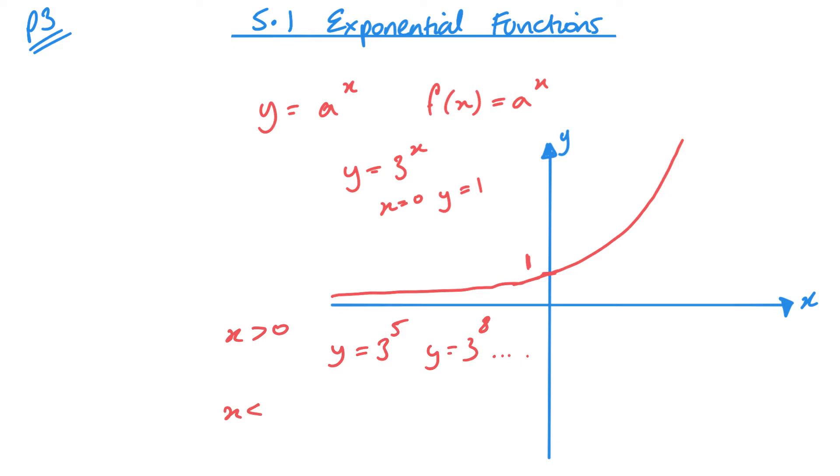When I look at negative numbers of x, say y equals 3 to the power minus 1, well that's 1 third. If I look at y equals 3 to the power negative 3, well that's 1 over 3 cubed, so 1 over 27.